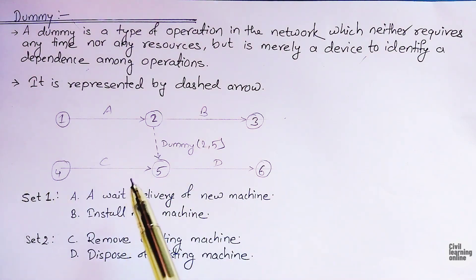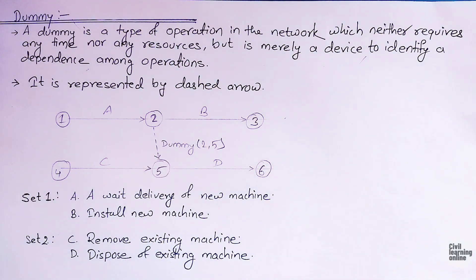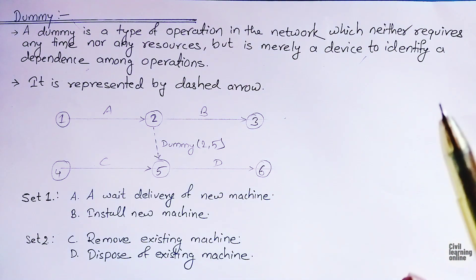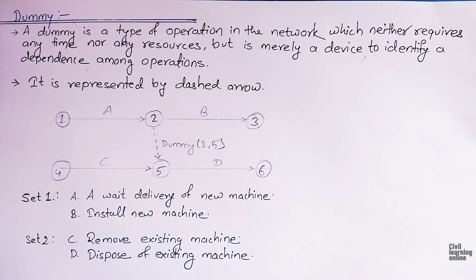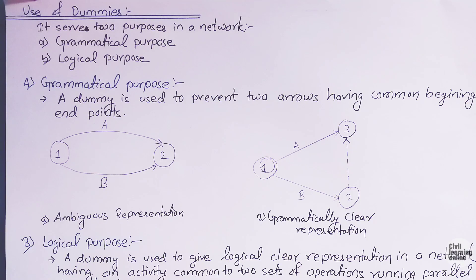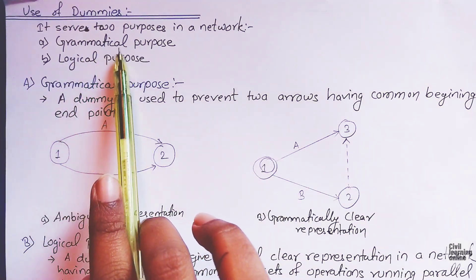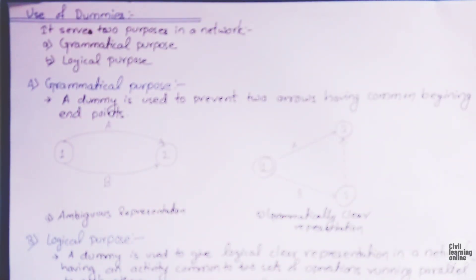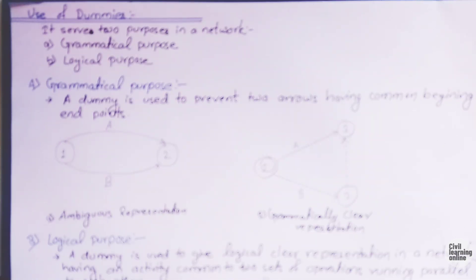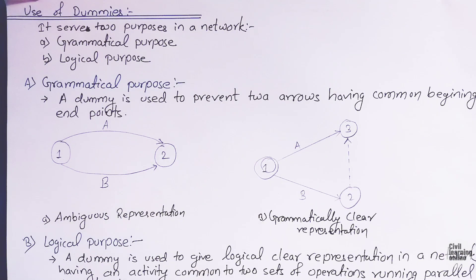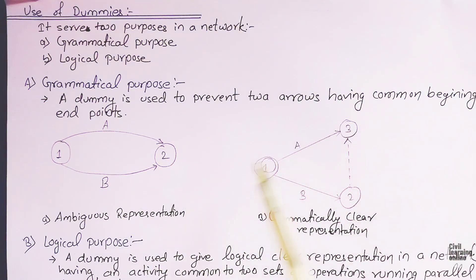Until the new machine is delivered, we cannot remove or displace the old machine. In such a case, the dummy activity comes into consideration. Now moving toward the uses of dummies: in a project network, dummy activities are provided to fulfill two purposes — grammatical purpose and logical purpose.